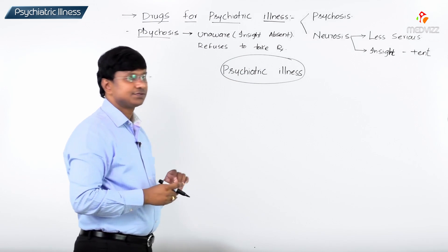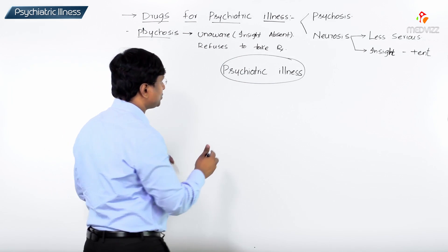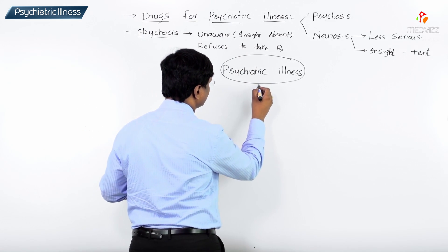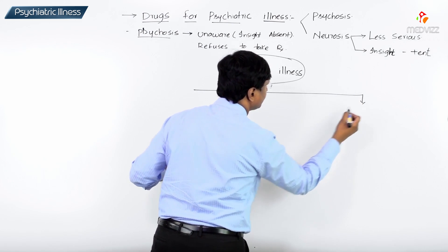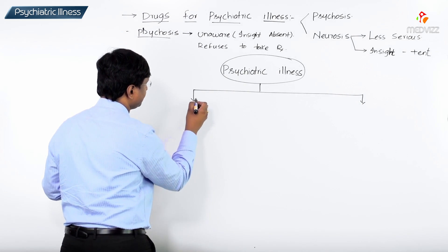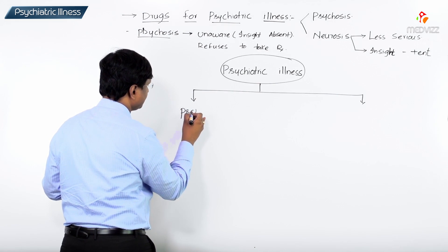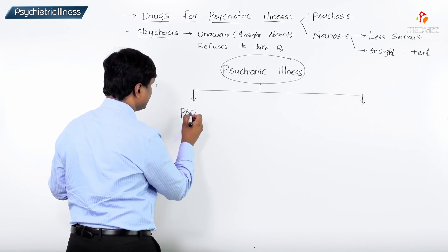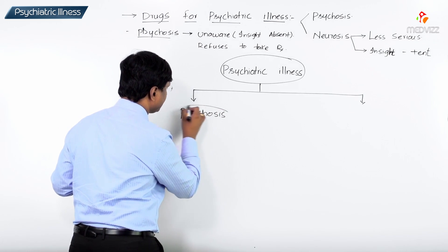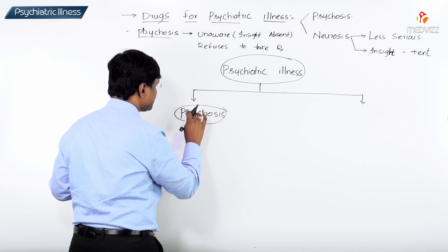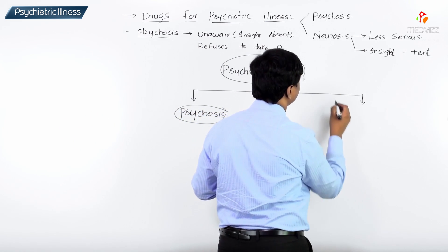So we classify psychiatric illness into two: one is psychosis and the other is neurosis.